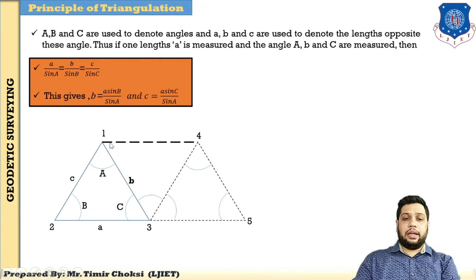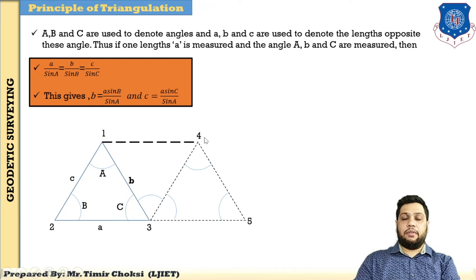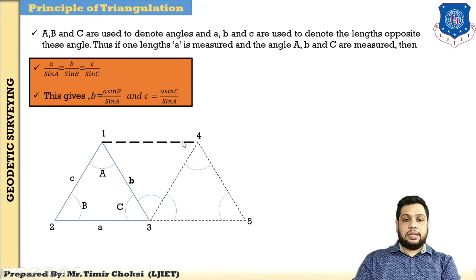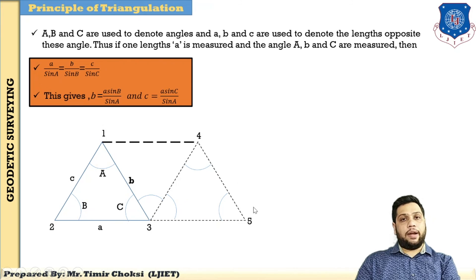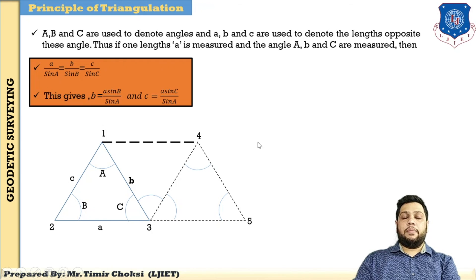Moving to the next triangle — using the side already computed as a known side — you find further sides by the same formula. You find the sides of triangle 1-3-4, and from the third triangle you get the value of side 4-3, then find sides 3-5 and 4-5. This is the principle of triangulation: if the length and bearing of one side and three angles of a triangle are measured precisely, the length and direction of the other two sides can be computed using the sine rule.